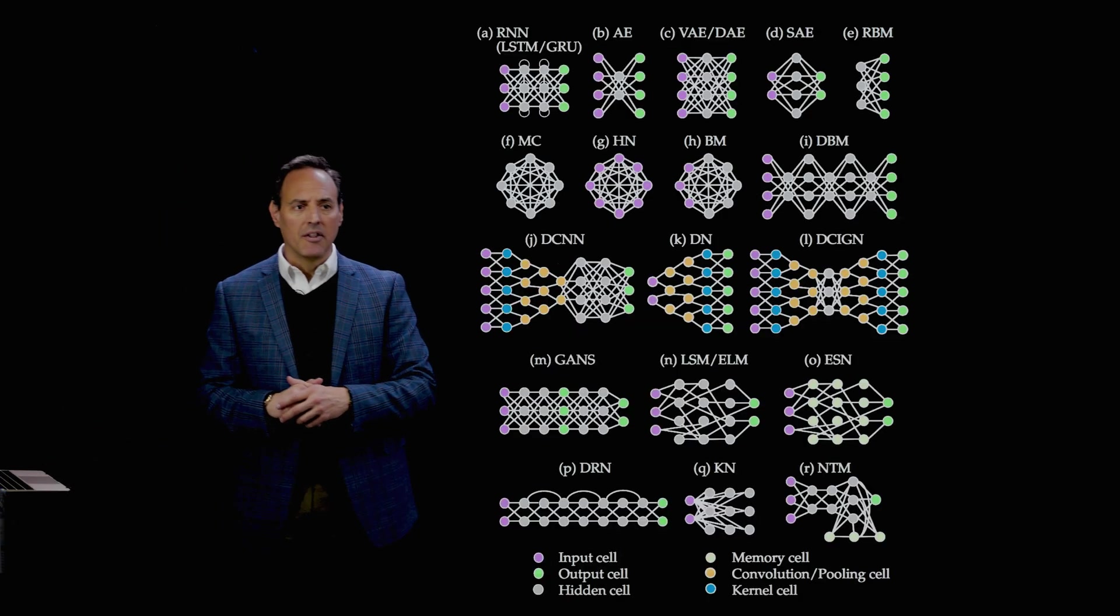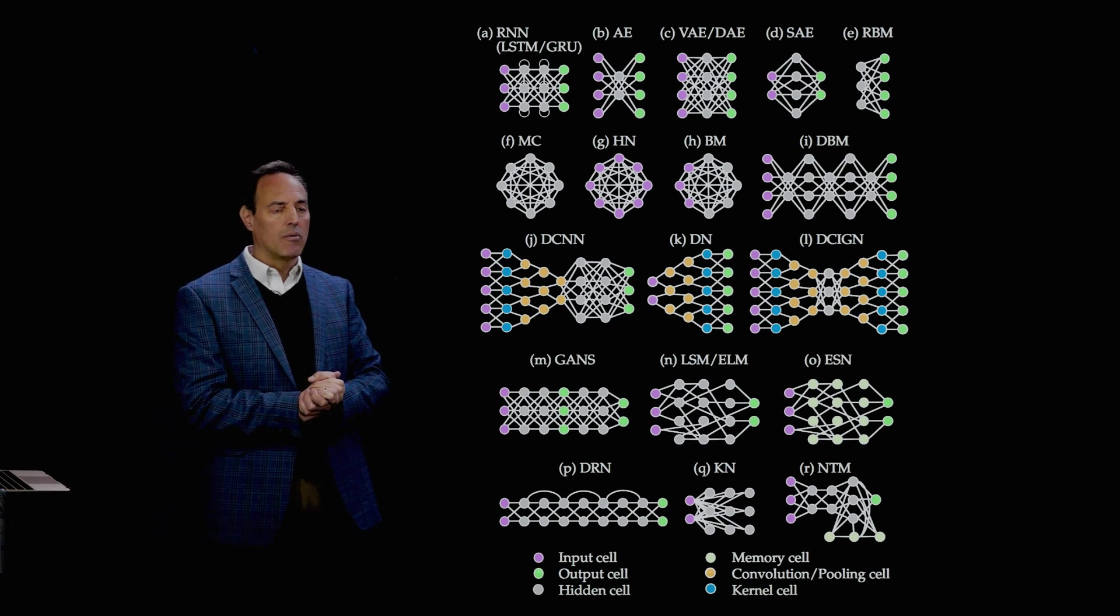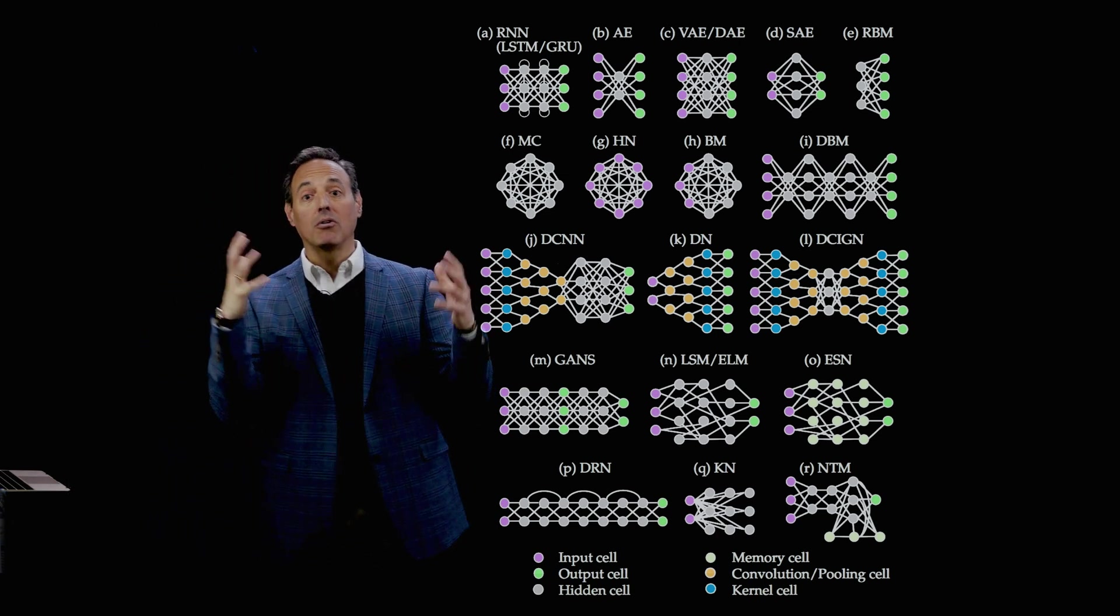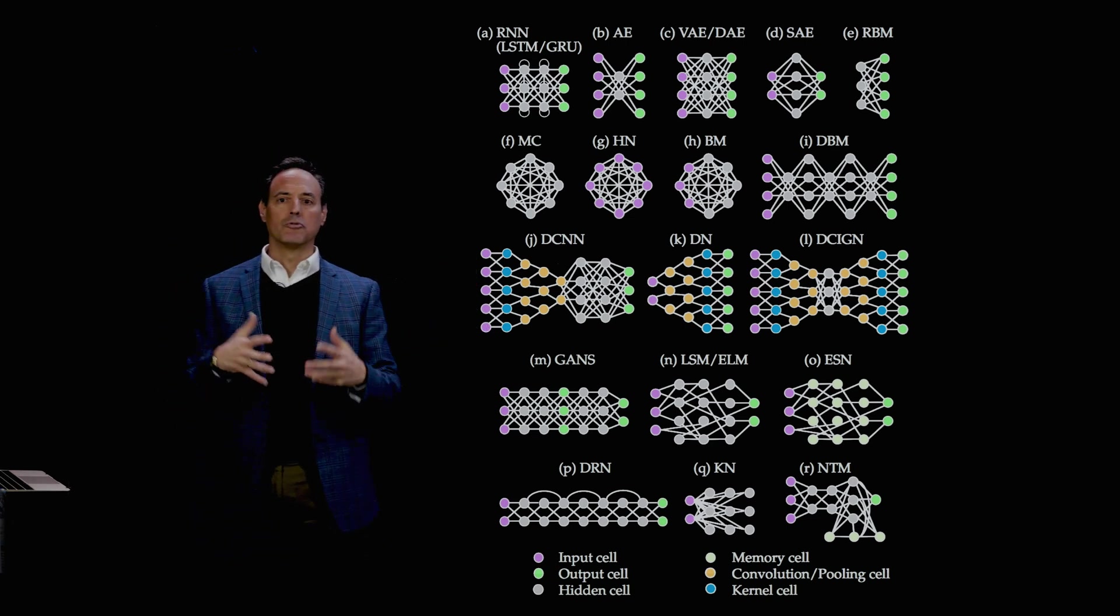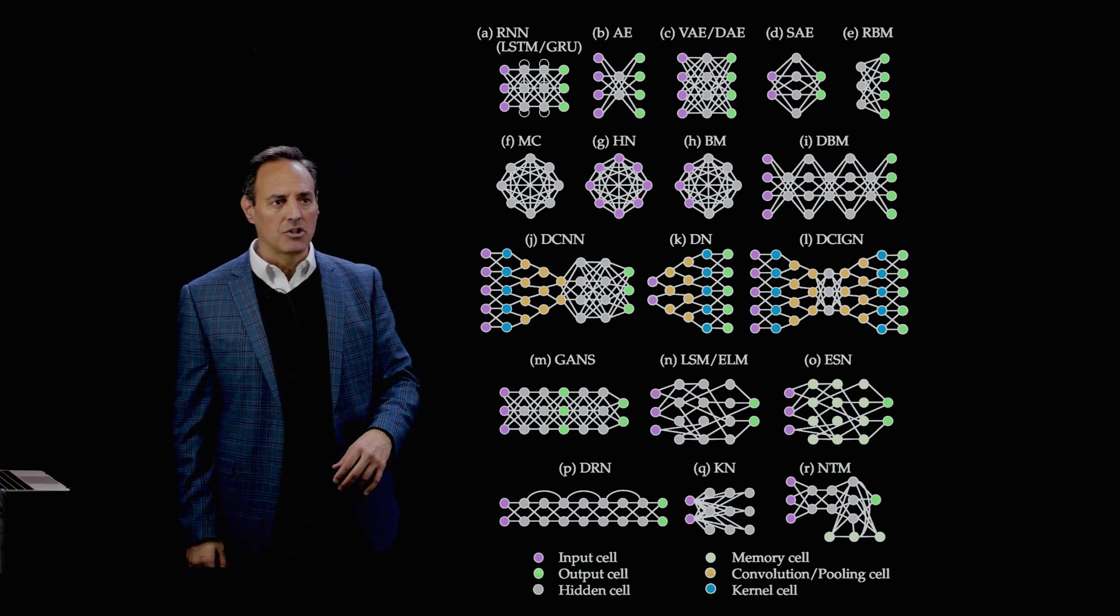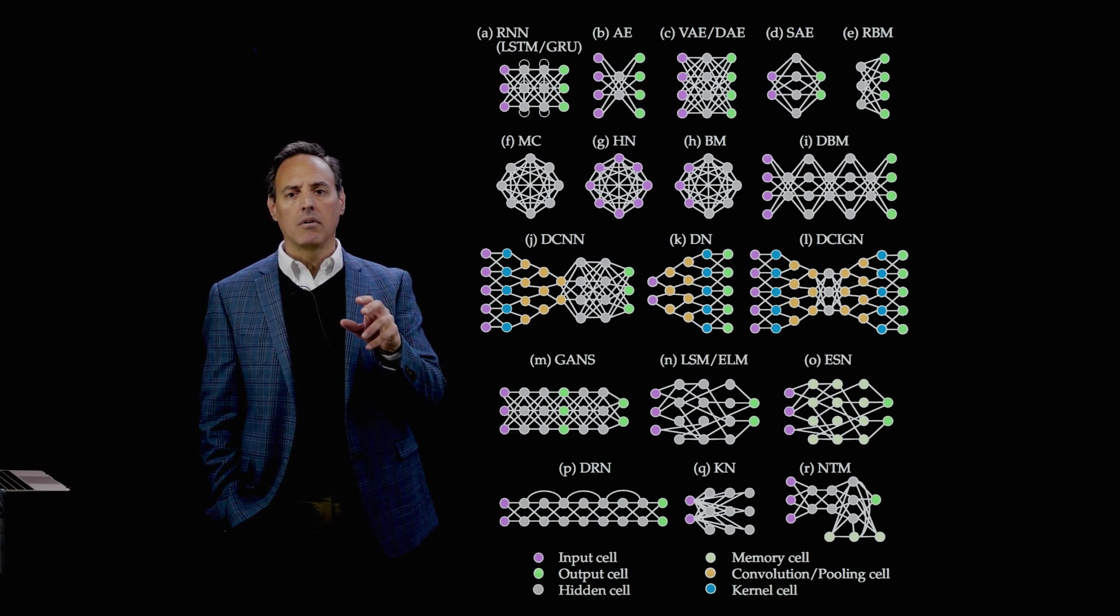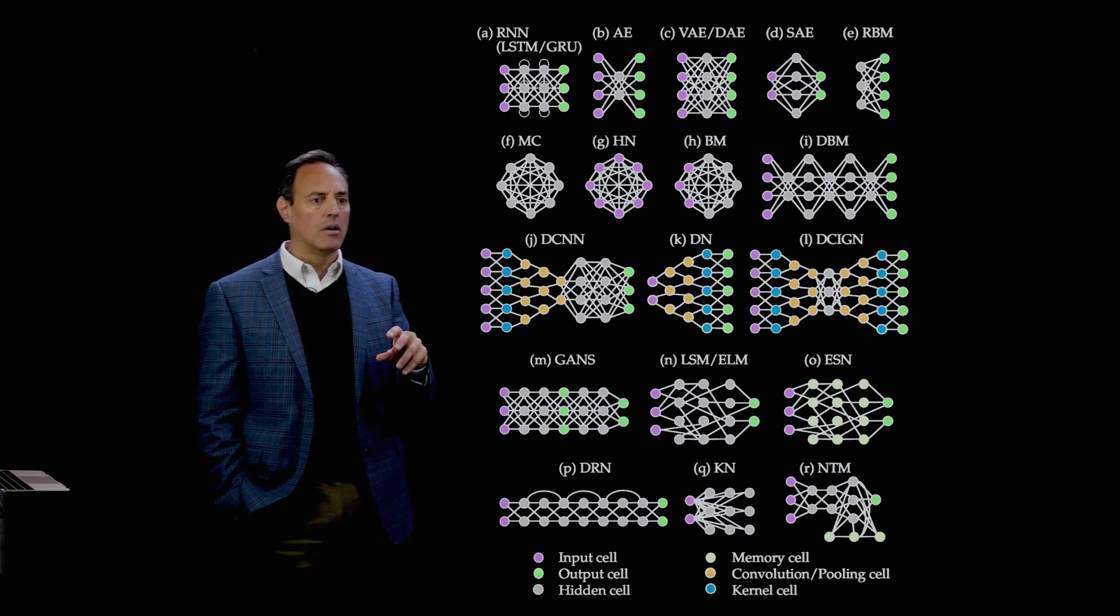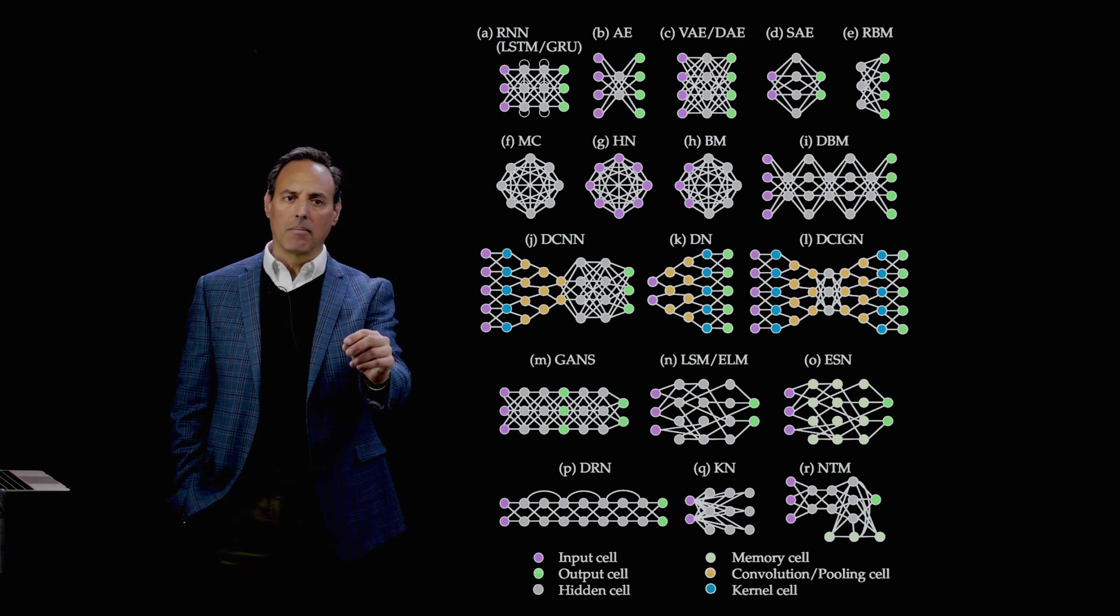I want to talk about the neural network zoo. This picture in the book is based upon an article written about neural network zoos, which highlights the different architectures people have come up with for different applications. These are the canonical representations of what neural networks look like.